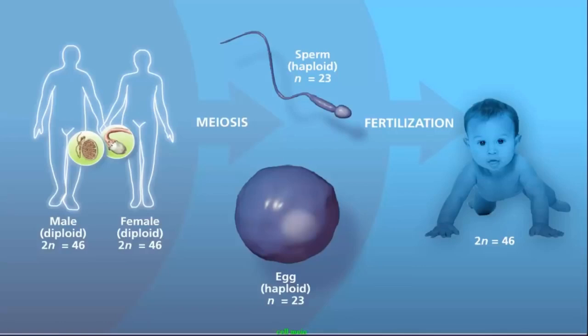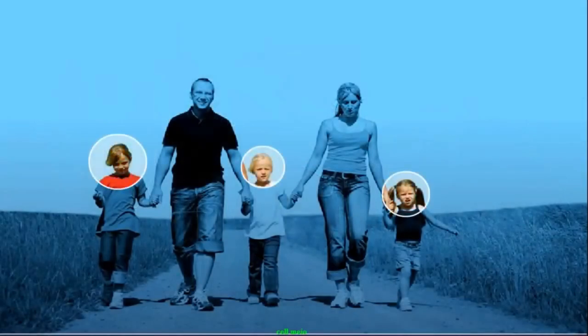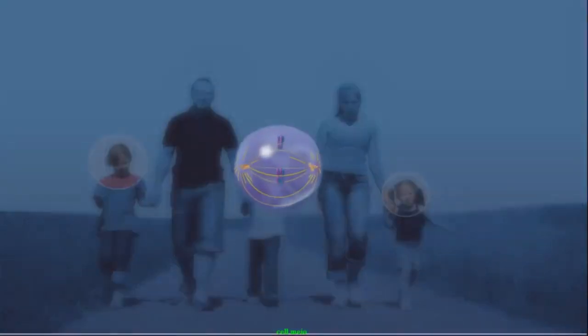This explains why a child isn't identical to either parent. But why aren't siblings identical? The diversity comes from several sources.